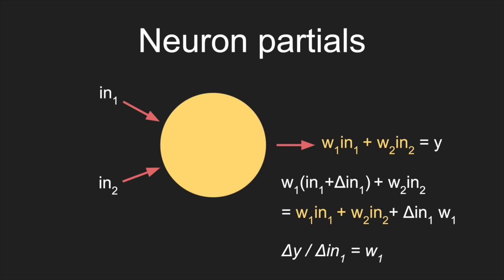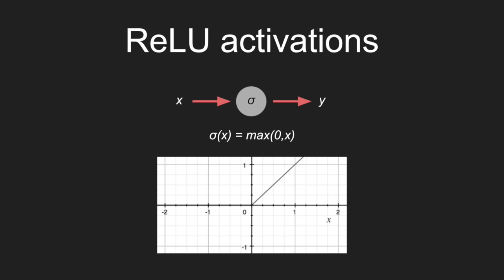The next thing I want to look at is activation functions. One activation function that's actually used a lot is called the ReLU. Basically, if the input is positive it just outputs the input — same thing as the input. If the input is negative, it outputs zero. Looking at the graph, it's zero up until zero and then it becomes a line. It's not a complicated activation function, but it works really well and I think it's used in most state-of-the-art convolutional neural networks for image recognition. It's actually really powerful — a good activation to know.